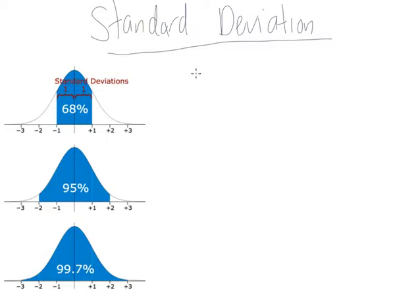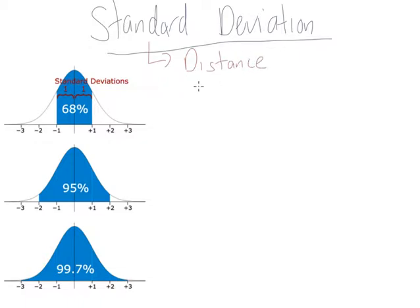So what is it? Standard deviation is a mathematical distance. It's important we look at it as a distance. It's also a measure of spread.